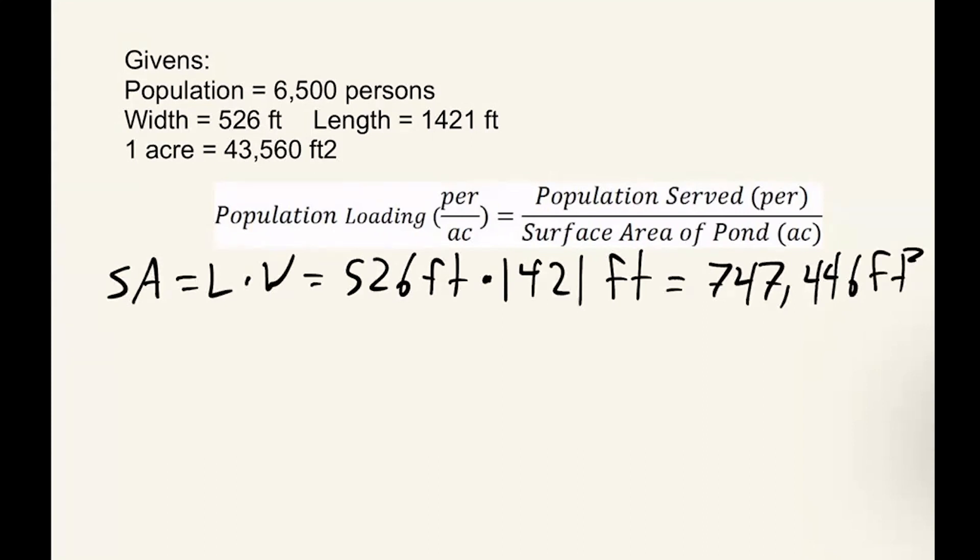After we have our surface area in square feet, it's time to convert to acres. So we're going to take 747,446 square feet and we're going to convert that to acres by adding in a conversion factor of 43,560 square feet. So we divide 747,446 square by 43,560. This gives us 17.16 acres.